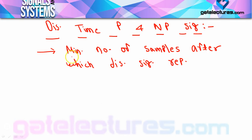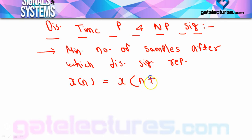Now, if I show you equation-wise: x[n] should be equal to x[n ± kN], where k is an integer and N is the period.